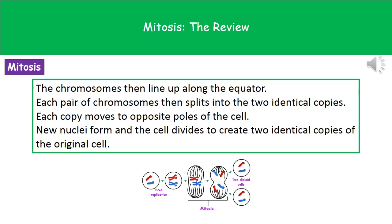The next thing that happens is that those chromosomes are going to line up along what's called the equator, or the middle of the cell. Each pair of chromosomes — because remember we've got identical copies — is then going to split, with one copy going to one end of the cell and the other copy going to the other end. Once that's taken place, a new nucleus forms around each of those sets of chromosomes.